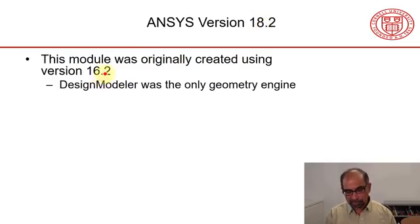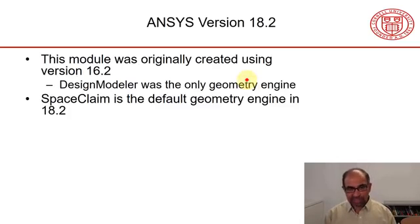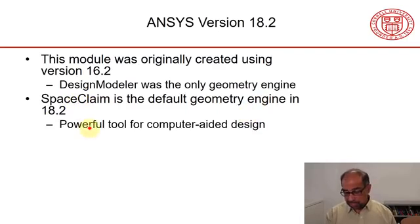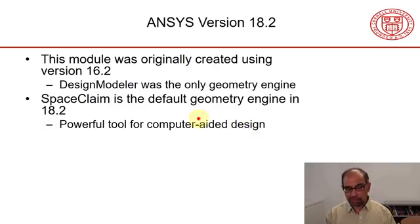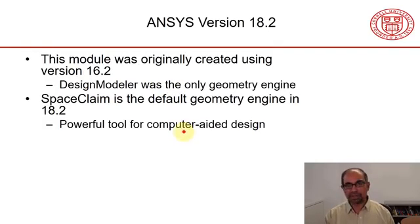At that time, in version 16.2, Design Modeler was the only geometry engine, so I recorded videos showing how to create that rectangle in Design Modeler. Currently, in version 18.2, there is a new geometry engine called Space Claim, which is the default geometry engine. Space Claim is a powerful tool for comparative design. It was originally developed by a company called Space Claim, has been acquired by ANSYS, and folded into the Workbench interface. All development is going to be focused on Space Claim, and Design Modeler is frozen, so there's a compelling reason to switch to Space Claim.